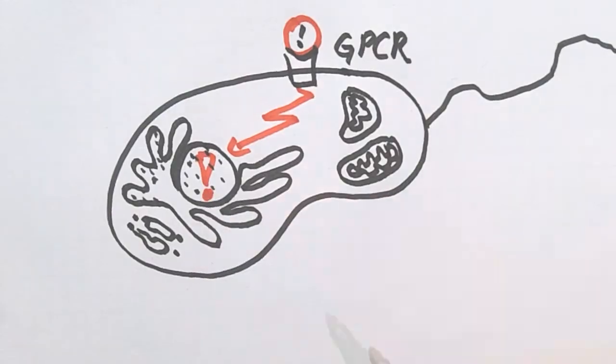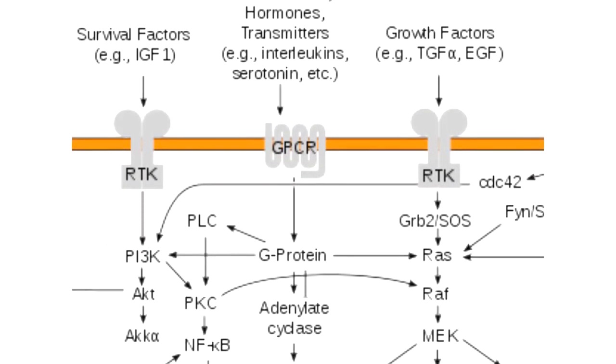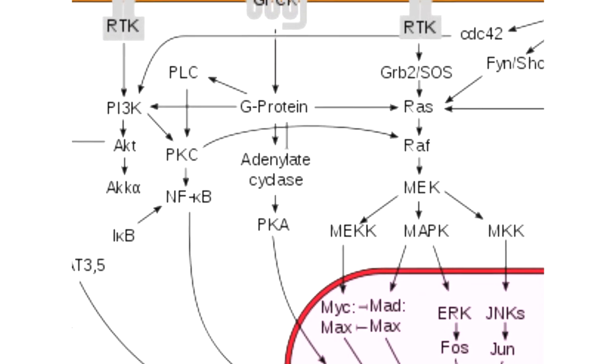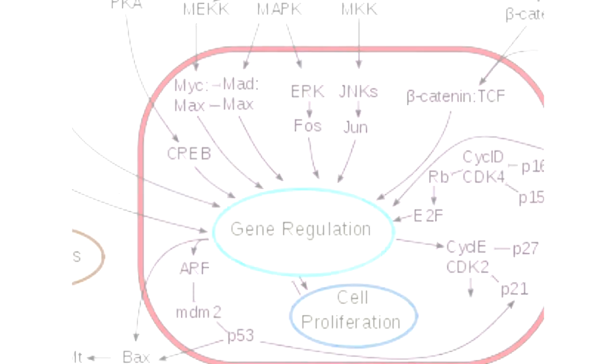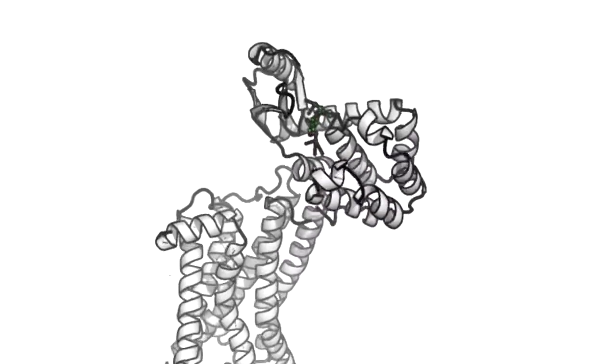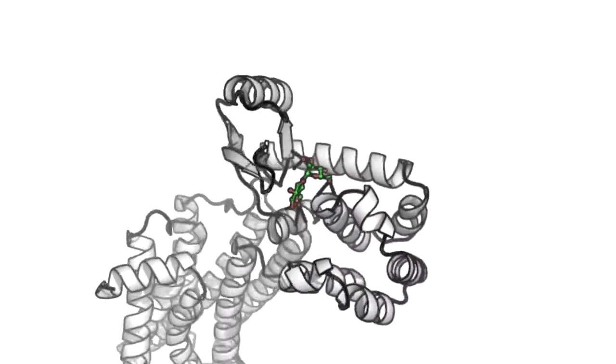Since there are thousands of different GPCRs found in humans and other species and since they regulate a wide range of biochemical processes, this class of receptors is a great target for the engineering of modern drugs.